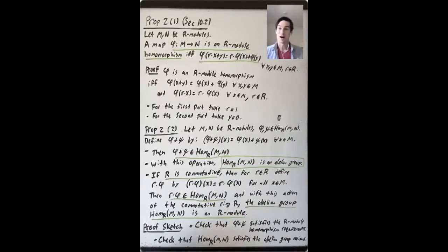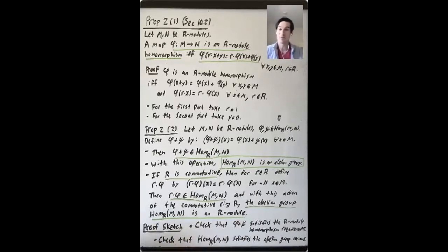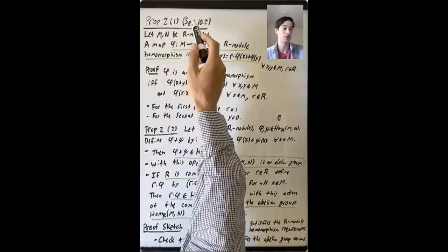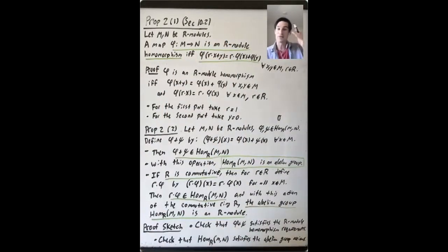In the last lecture, we talked about R-module homomorphisms and gave several examples. We'll start this lecture by giving a criterion for how to tell whether a map between two R-modules is an R-module homomorphism. Then we'll talk more about the structure of the set of R-module homomorphisms between two R-modules, M and N. We're going to take proposition two in section 10.2 and divide it up and talk about the different parts separately.